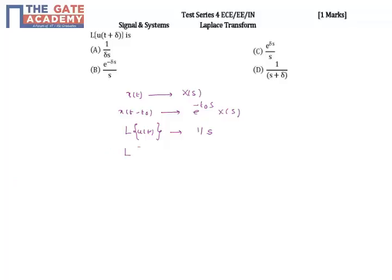So the Laplace transform of u of t minus delta, I'll write t minus delta. This is similar to x of t minus t naught, so for this, e to the power minus t naught, where minus t naught is minus delta...